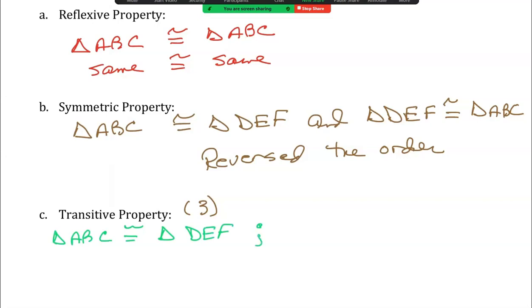Therefore, by the transitivity property, I can now say triangle ABC is congruent to triangle PQR.